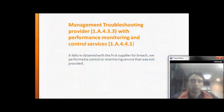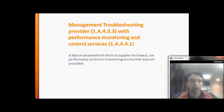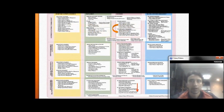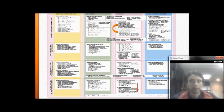Management troubleshooting with the provider — performance monitoring and control of service: a file of the failure obtained with the first provider is reviewed, and a control and monitoring service is performed for the service that was not delivered.